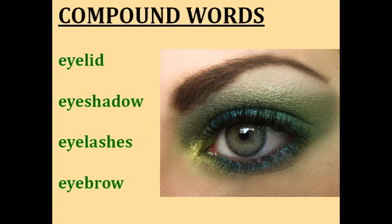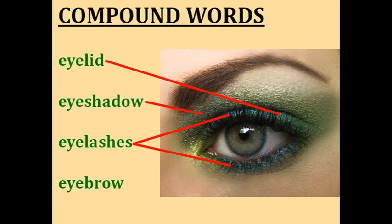Now I'm going to teach you four words related to your eyes. Your eyelid is the small fold of skin that covers your eyes when you close them. Women like to decorate their eyelids with a type of makeup called eye shadow — in the picture, she's wearing green eye shadow. The tiny hairs on your eyelids, on the top and on the bottom, are called your eyelashes. And the line of hairs above your eye is your eyebrow. So four compound words with eye: eyelid, eye shadow, eyelash, and eyebrow.